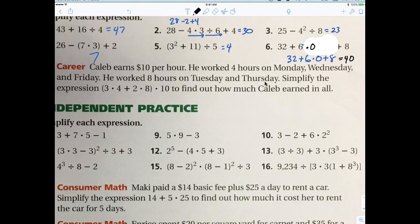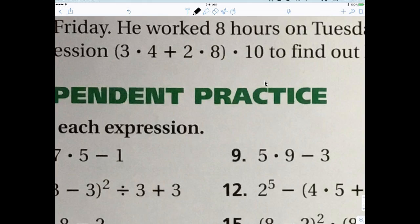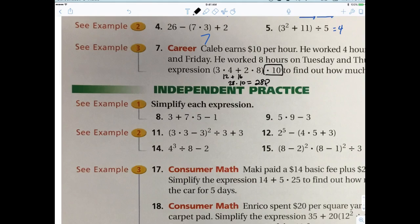Let me hear you. Lila earns $10 per hour. He works four hours on Monday, Wednesday, and Friday. He worked eight hours on Tuesday and Thursday. Simplify the expression. Okay. So what do I have to do first? 3 times 4, and that equals 12. And then 2 times 8, that equals 16. And you add those together, and that's 28. Times 10, it equals 280. You're awesome. That's very good.